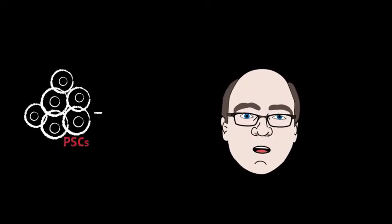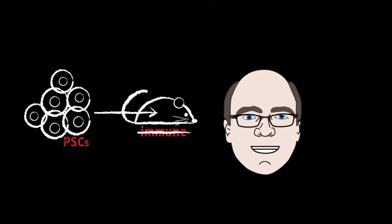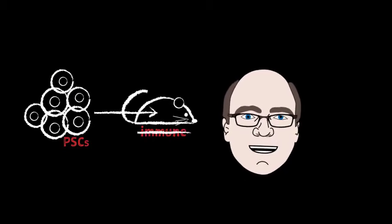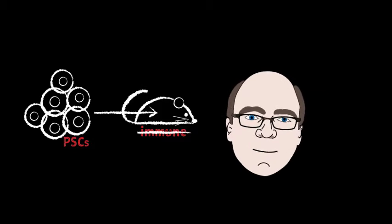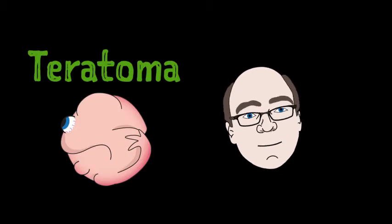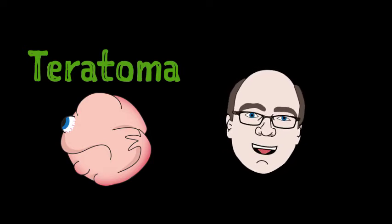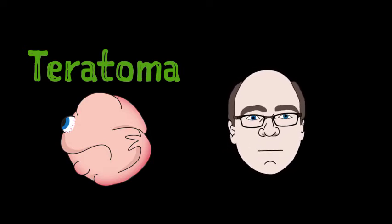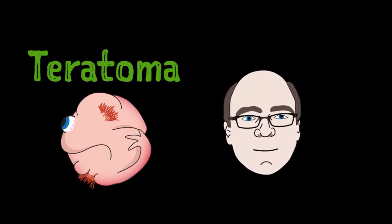On the other hand, scientists have known for quite some time that when pluripotent stem cells are injected into an animal without an immune system, they will spontaneously develop into a three-dimensional structure called a teratoma. Inside this teratoma, we can find many different cell types, including some very complex structures, such as hair follicles and glands.